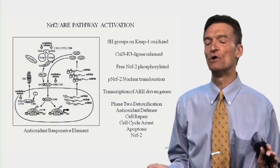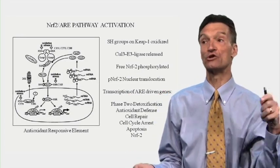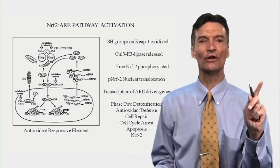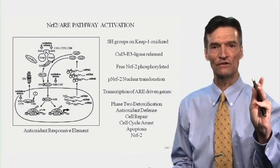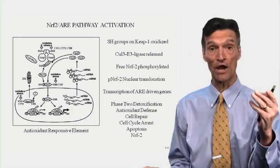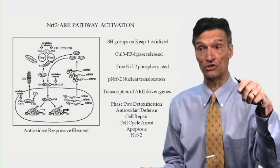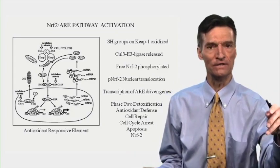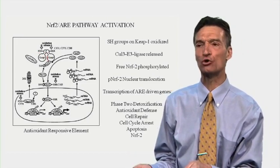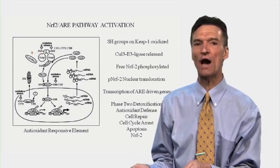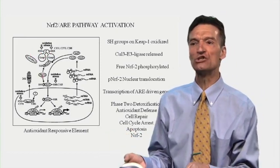Nrf2 is made at a low level and it's more or less instantly sequestered and degraded, unless the cell experiences oxidative stress. If we experience oxidative stress and run out of antioxidants and glutathione — such as if you have high sugar, or there's a toxin, or you go for a brisk run and make some free radicals — the thiol groups (SH groups) on KEAP1 will be oxidized, and KEAP1 falls apart. It releases Nrf2.